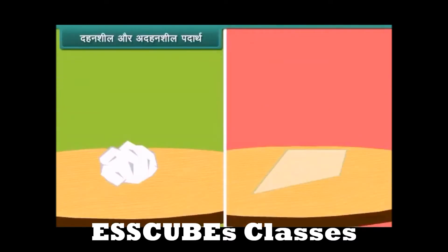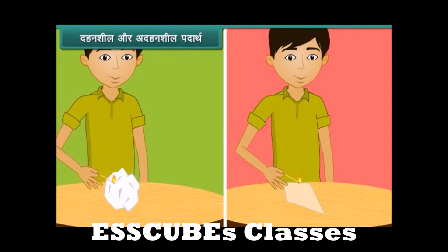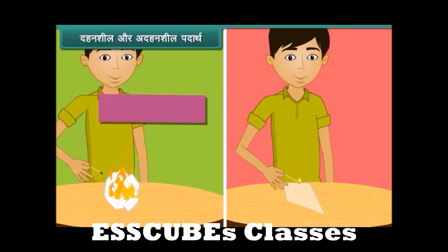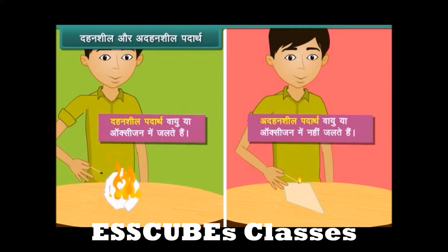दहनशील और अदहनशील पदार्थ: पदार्थ दो प्रकार के होते हैं — कुछ पदार्थ आग पकड़ लेते हैं और जलते हैं, जबकि कुछ पदार्थ आग नहीं पकड़ते। एक लड़का माचिस की जलती हुई तीली को कागज और काँच के पास ला रहा है। कागज आग पकड़ लेता है और इसलिए यह दहनशील पदार्थ कहलाता है। काँच नहीं जलता — ऐसे पदार्थ जो वायु या ऑक्सीजन में नहीं जलते, अदहनशील पदार्थ कहलाते हैं।